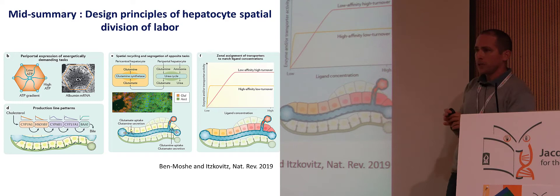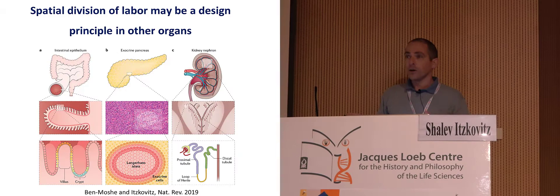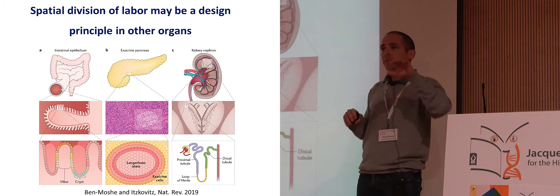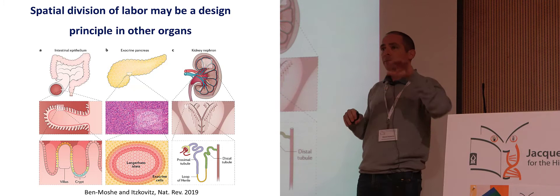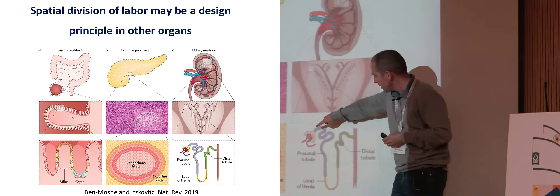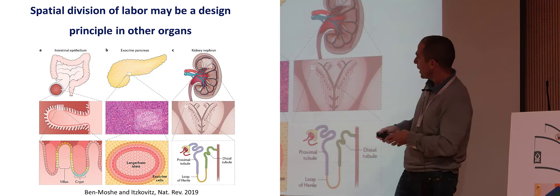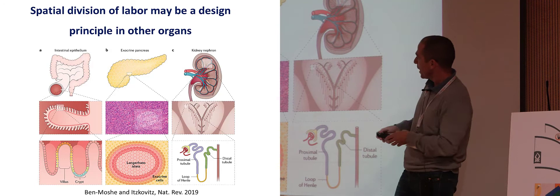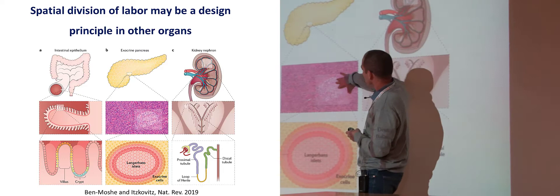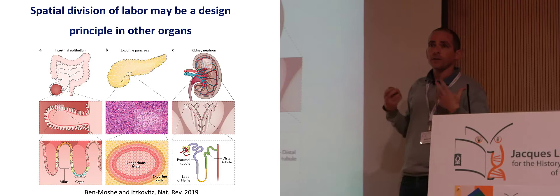I'll move to the second part of the talk. We think the spatial division of labor is not unique to the liver, but is a common principle in many other organs. Many organs are made of repeating anatomical units — the kidney has millions of nephrons, linear structures with graded gene expression and division of labor. In the pancreas, the islets of Langerhans form signaling hubs that shape gene expression around them. The tissue I want to focus on for the remaining part is the gut, the intestine — I think the most beautiful example of a stereotypically structured tissue.